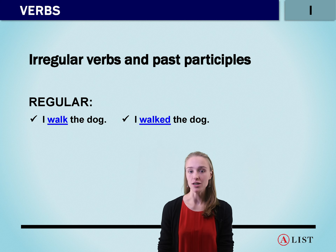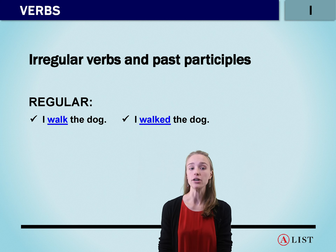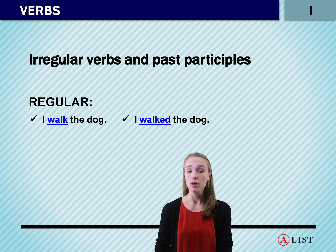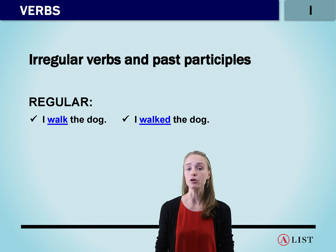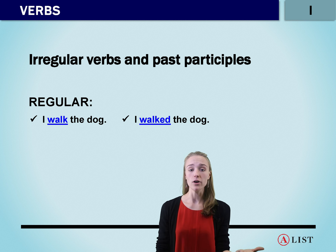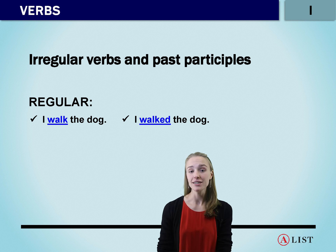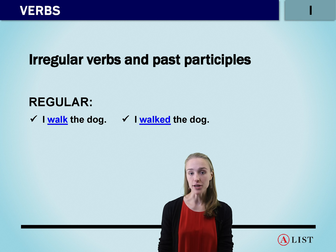There are a couple of other things we need to talk about when dealing with verbs, and one of our last ones here are regular verbs and past participles. For most regular verbs, we are changing the ending when we change our tense. For example, in past tense, a regular verb ends with 'ed.' So we would say 'I walk the dog' or 'I walked the dog.' Another example would be 'I jump today' or 'I jumped yesterday.'